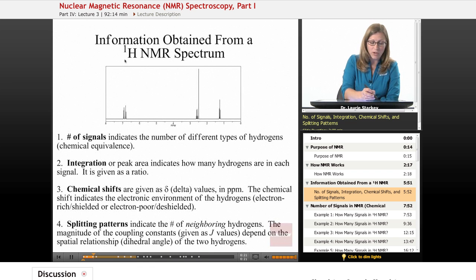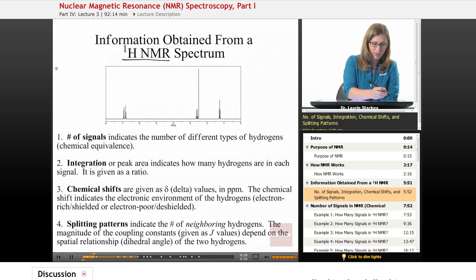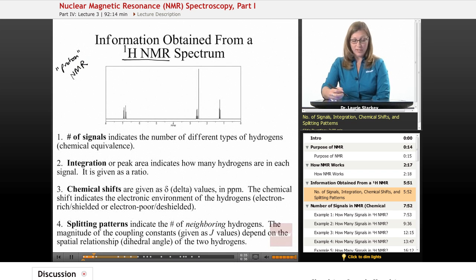Now, we're going to be starting with proton NMR, just looking at the normal isotope of hydrogen—we describe that as proton NMR. This is an example of what a proton NMR looks like. The first thing is the number of signals that tells us how many unique types of hydrogens there are in the structure.